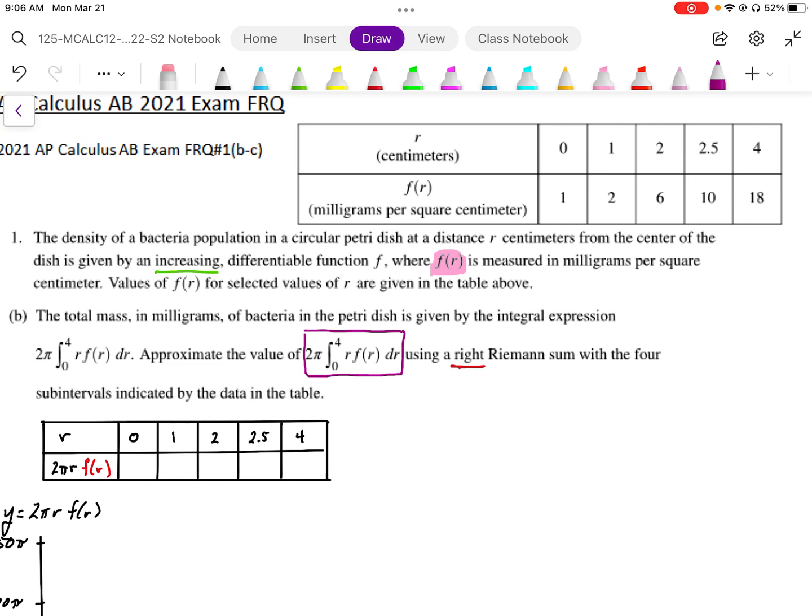When r is equal to 0, the area is going to be 2π r times f(r). So 2π r times the radius 0 times f(r) gives us an area of 0.